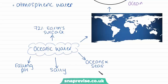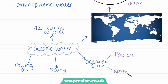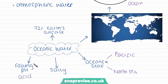Oceanic water is broken up into oceans and seas. An example of an ocean would be the Pacific, whilst seas are smaller versions of oceans, such as the North Sea. As you might know, the oceanic water is typically very salty, and it also has a falling pH, which means it is becoming more acidic over time. We'll look at this later on in a different video.